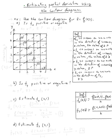The topic is estimating partial derivatives using the contour diagram. Let's do this example. Use the contour diagram for z equals f of x, y. Question A is: is f_x positive or negative? Let's read the definition — what do we mean by the partial derivative of f with respect to x being positive?